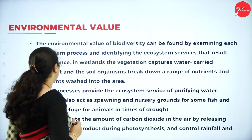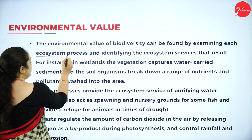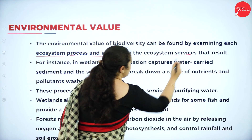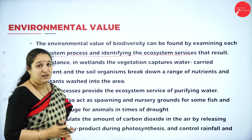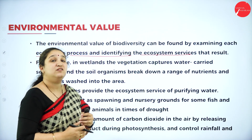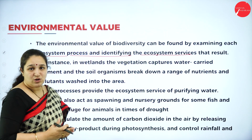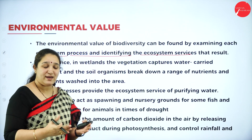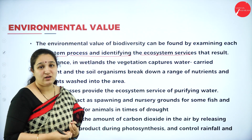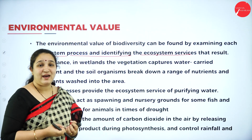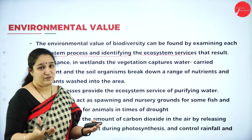First, let's look at the environmental value. The environmental value of biodiversity can be found by examining each ecosystem process and identifying the ecosystem services we can get. For every ecosystem, there is a different environmental value. For example, the forest ecosystem acts as a sponge for water — it holds up the soil so that soil erosion is reduced, absorbs air pollutants, and reduces greenhouse gases. So we have many environmental benefits from the forest ecosystem.